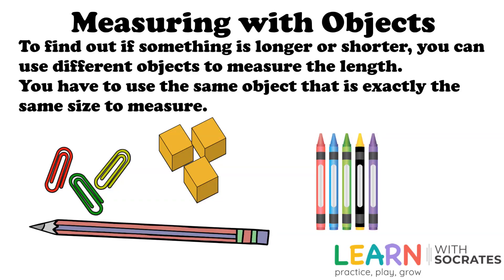Measuring with objects. To find out if something is longer or shorter, you can use different objects to measure the length. You have to use the same object that is exactly the same size to measure.